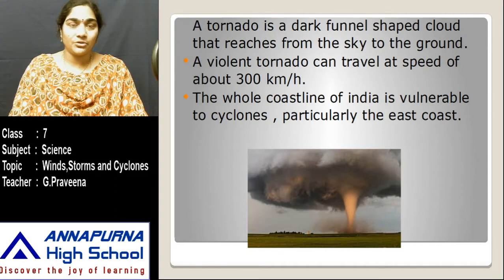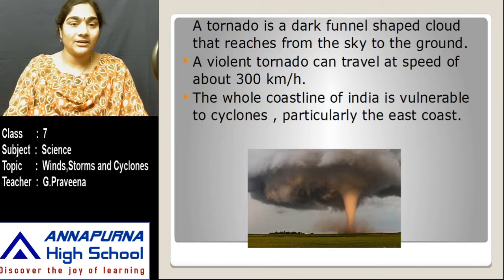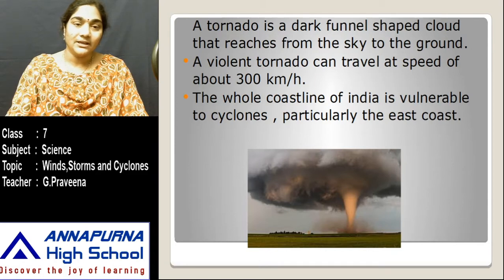A violent tornado can travel at a speed of about 300 km per hour. The whole coastline of India is vulnerable to cyclones, particularly the east coast. This is the image of a tornado, which is like a funnel-shaped structure narrow at the base and connecting to cumulonimbus clouds.